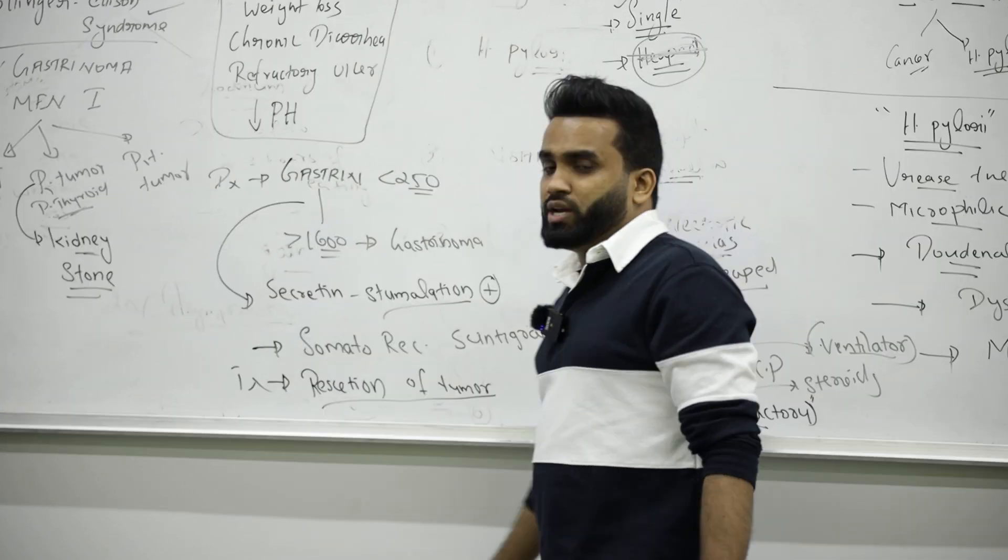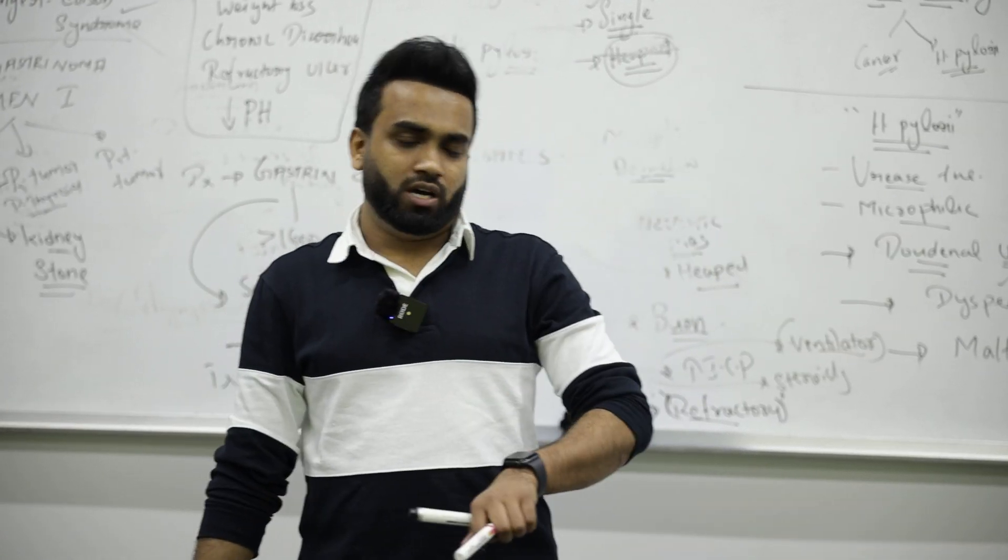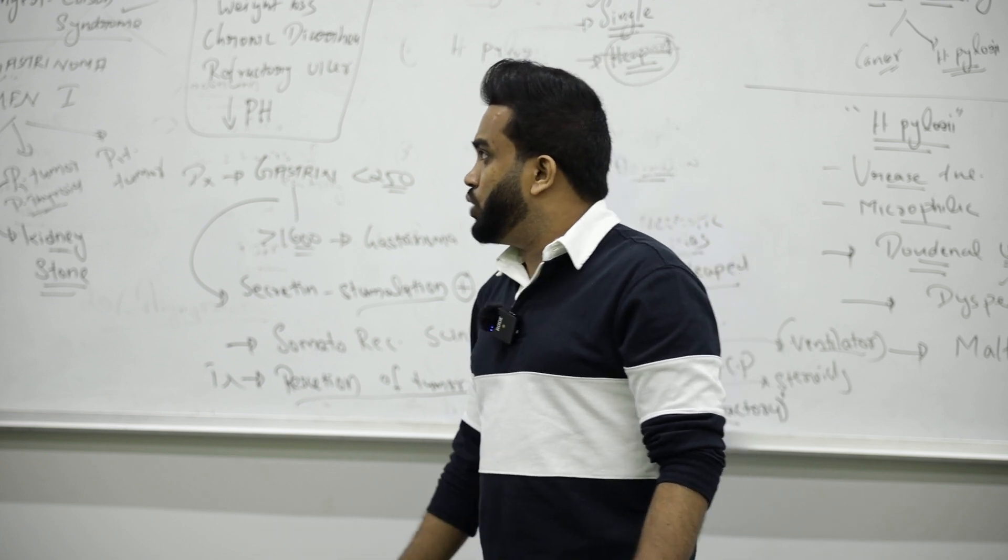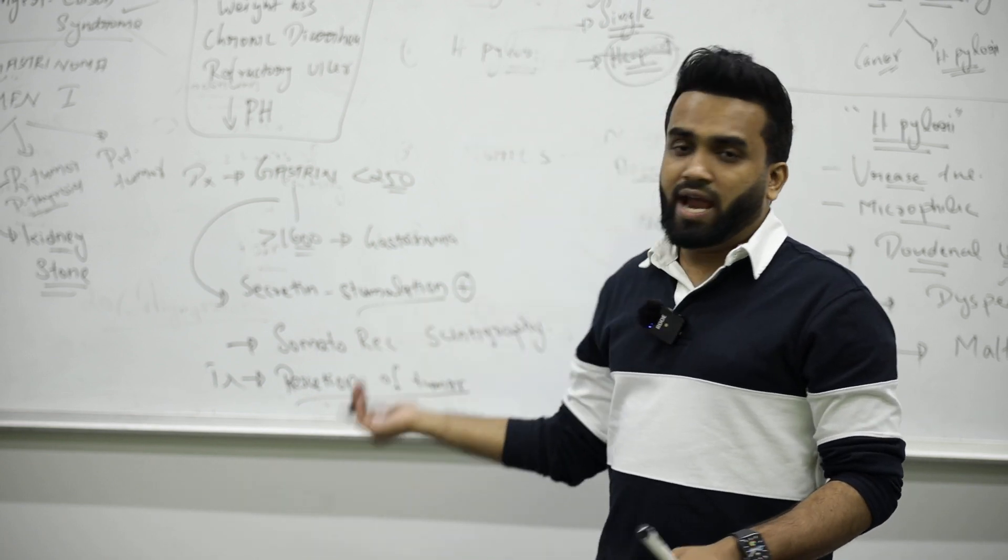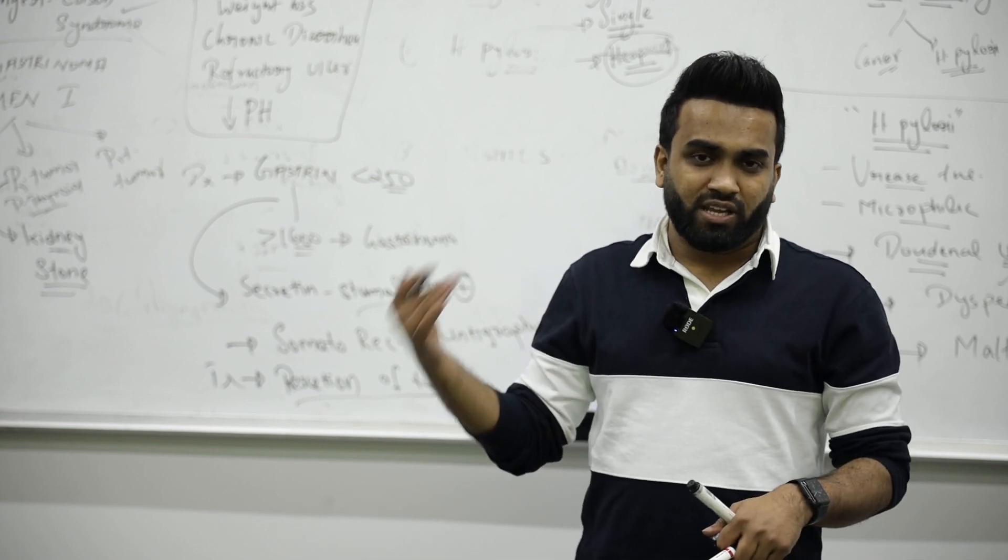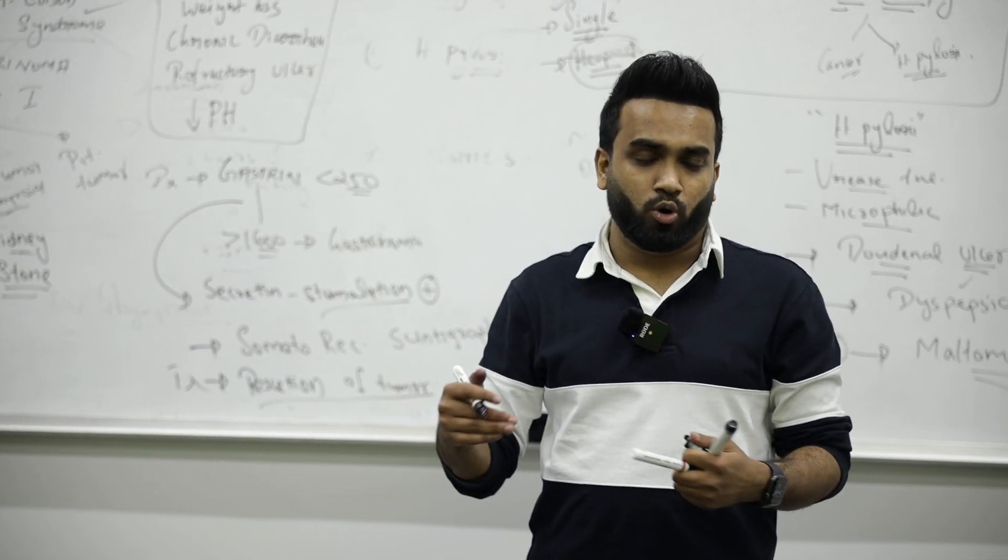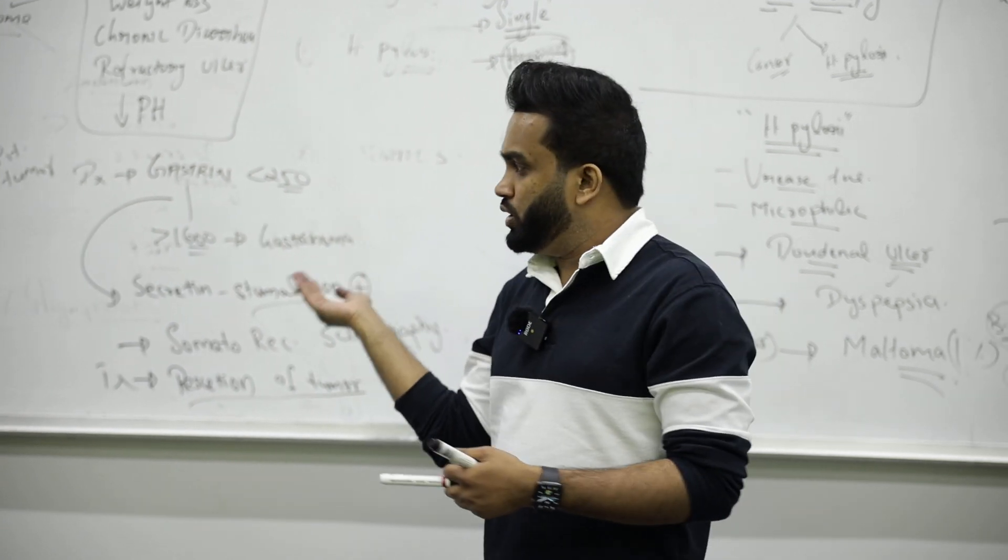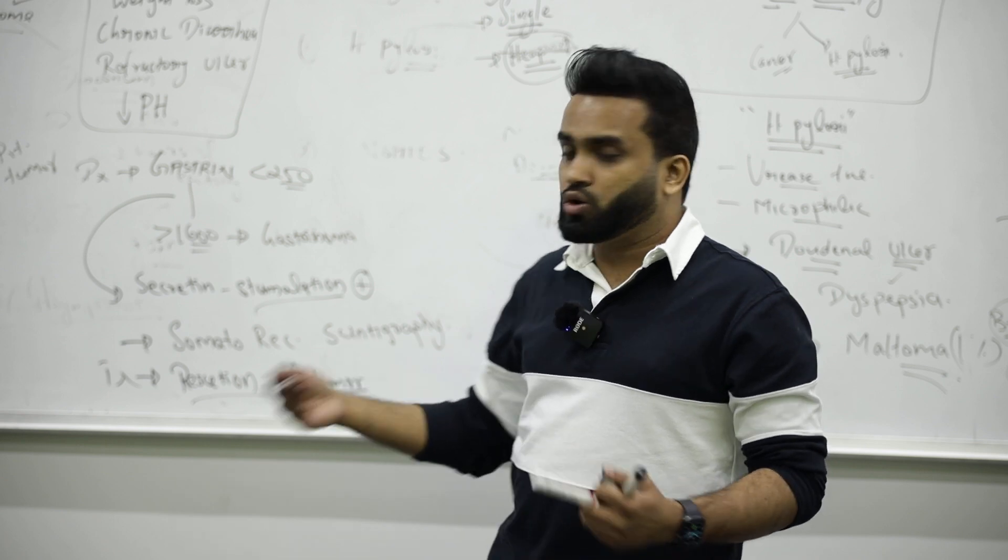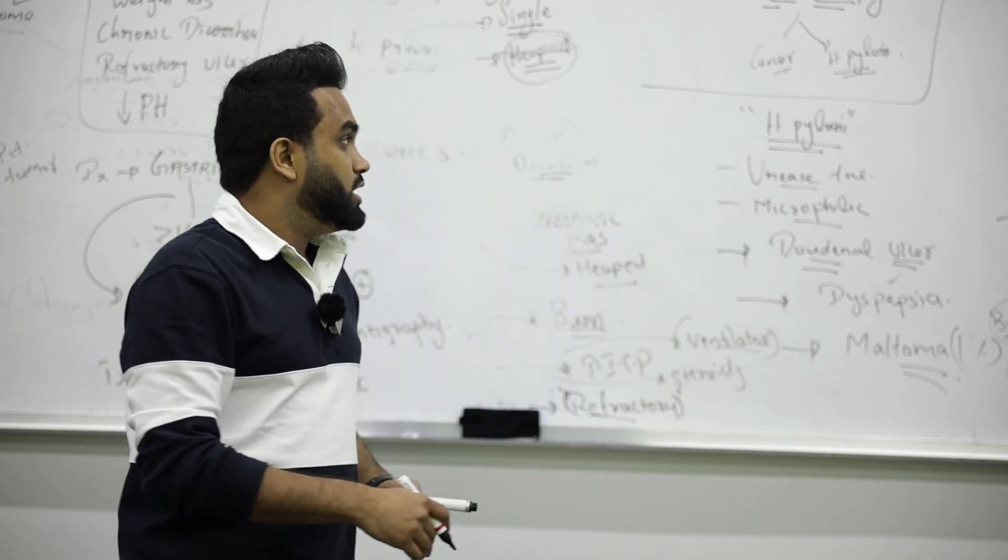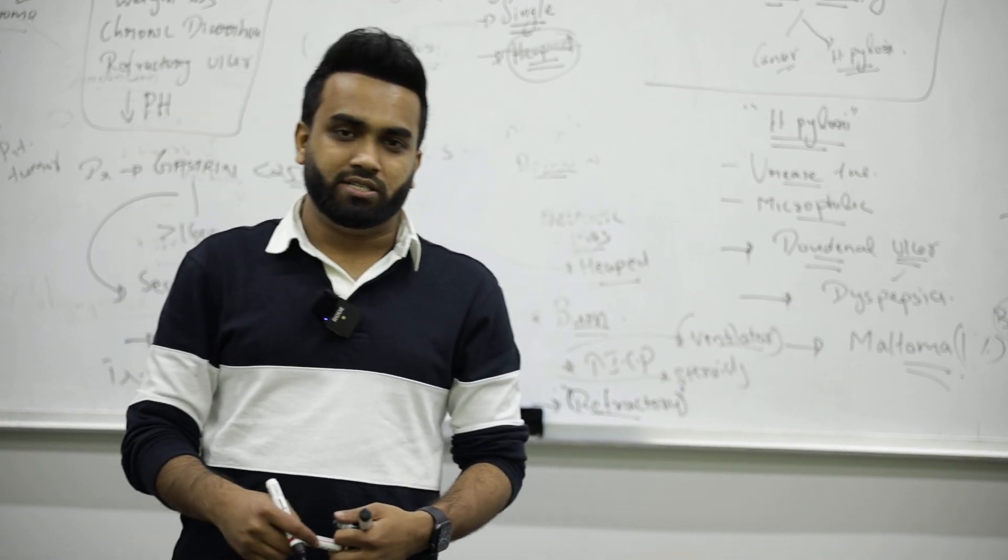Once again, these are the main causes of peptic ulcer. Remember, duodenal or gastric ulcer, everywhere endoscopy biopsy must be done to rule out Helicobacter pylori or cancer. If it's NSAIDs, stop it and give the patient PPI. If Helicobacter pylori, give the triple therapy. So according to the pathogen or according to the cause, we will manage the patient. That's all about peptic ulcer disease.